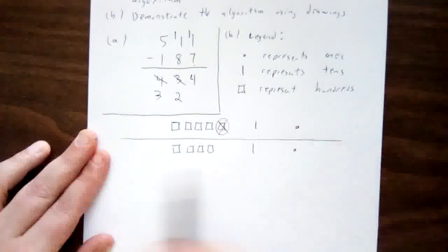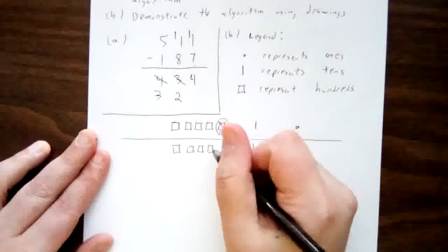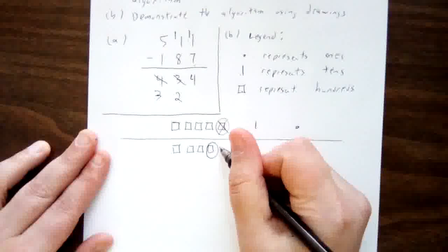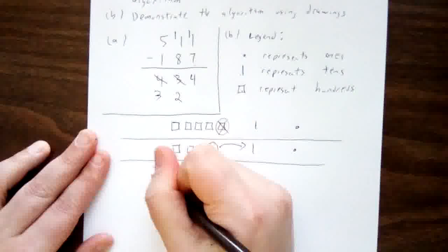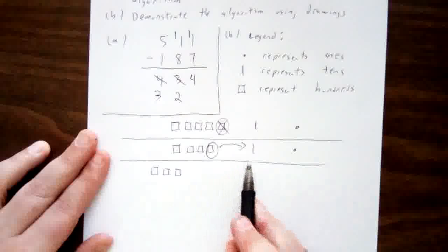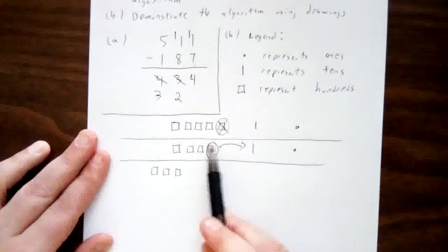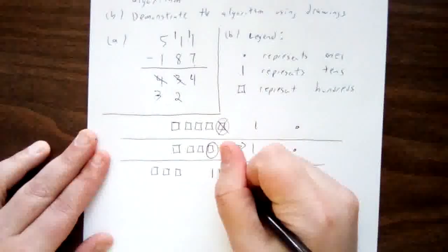The next thing we did in our algorithm was subtract eight tens from the one ten that we had. We clearly don't have enough, so this is where we borrowed. We borrowed from the four hundreds that were left over — we took one of those hundreds away and moved it into the tens place. That meant we had three hundreds left behind, and in the tens place we had the one ten we originally had. The square — the hundreds — is worth ten tens, so we now have ten more sticks.